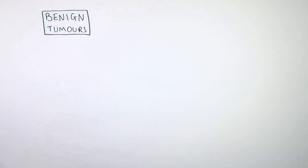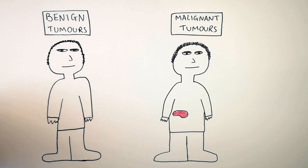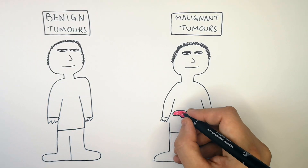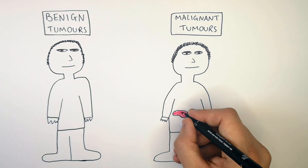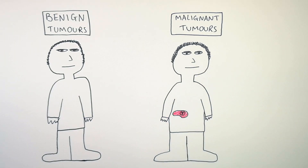So what is the difference between a benign tumor and a malignant tumor? In this example of a malignant tumor, I'm showing you a tumor that exists on the liver. If mitosis doesn't stop in liver cells, that means a tumor can form.